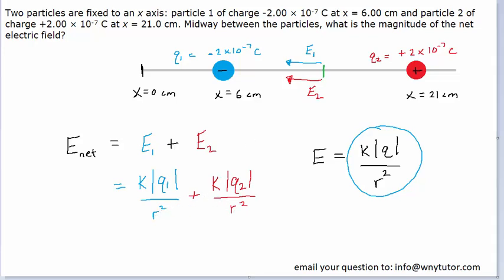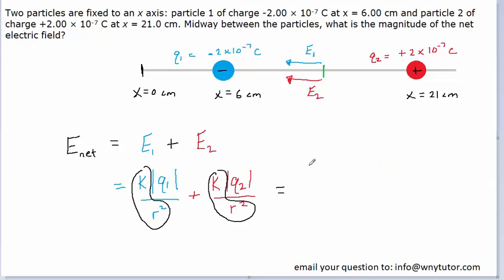In fact, if we want to get a little bit fancy, we can notice that both terms, the blue term and the red term, contain the same quantity K over R squared. So to slightly simplify our calculation, we can factor that out. So that would look like as follows: we would have K over the distance squared, and then we'll put in a big parentheses here, we'll have the magnitude of charge 1 plus the magnitude of charge 2.